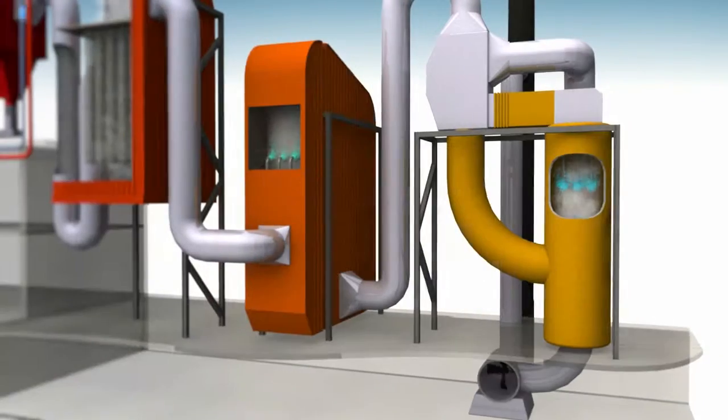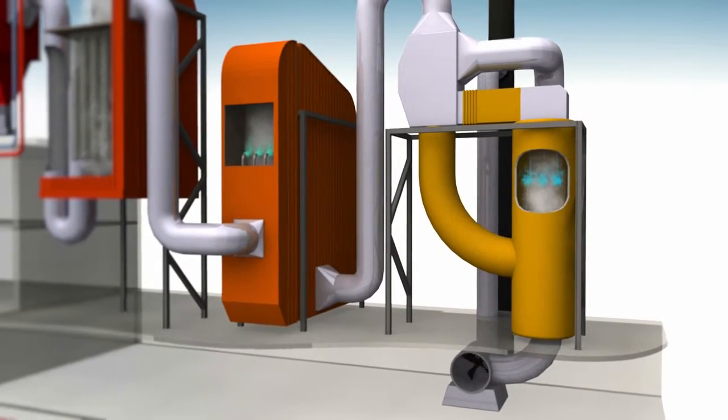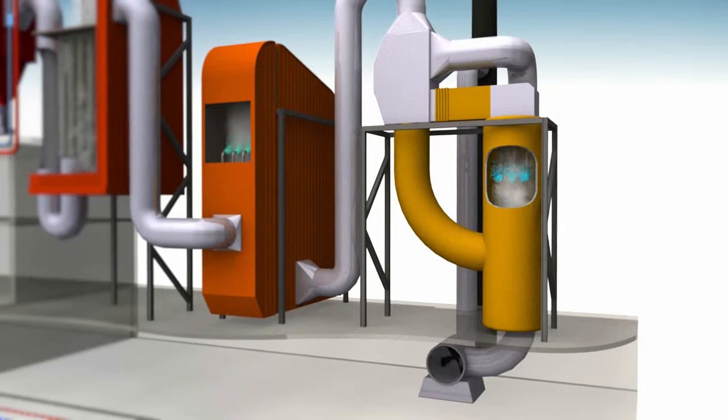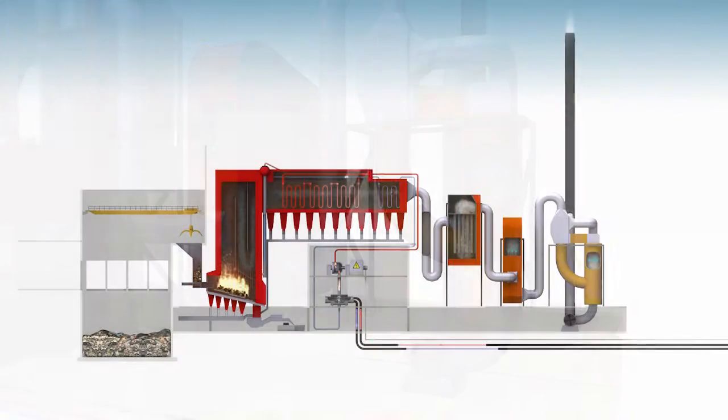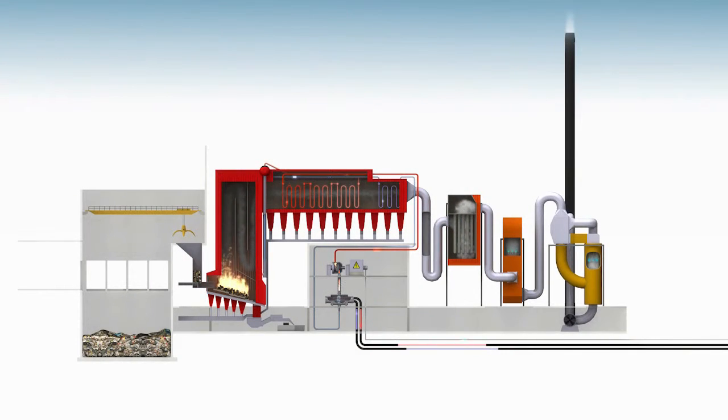The final stage of the cleaning process involves the use of what is known as a scrubber. In the scrubber, the flue gas passes through a mist of water. The scrubber removes chlorine and sulphur compounds, as well as any residual dust and heavy metals that may have escaped the bag filter. Finally, the treated flue gas is released into the atmosphere via a 75-metre tall chimney.